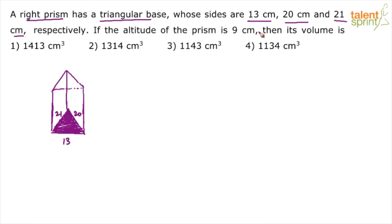And the height, the altitude of the prism is 9 centimeters. What is the altitude of the prism? 9 centimeters. Altitude here would mean this. This length. This is given as 9 centimeters.